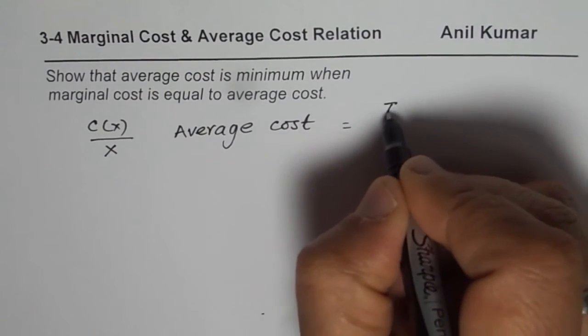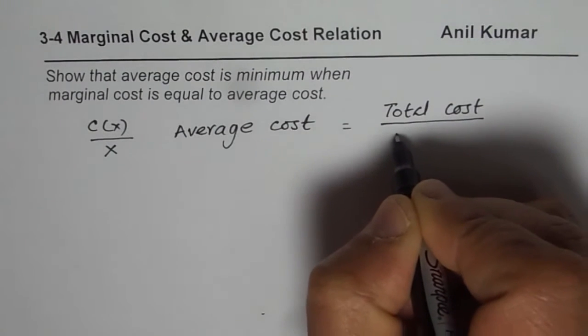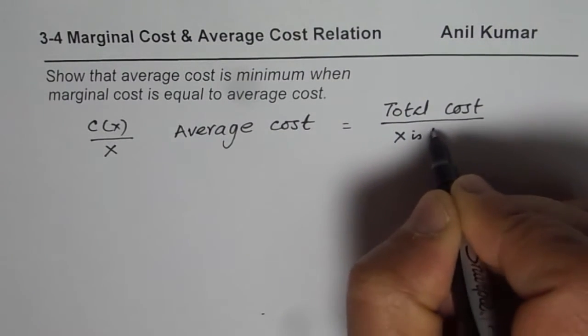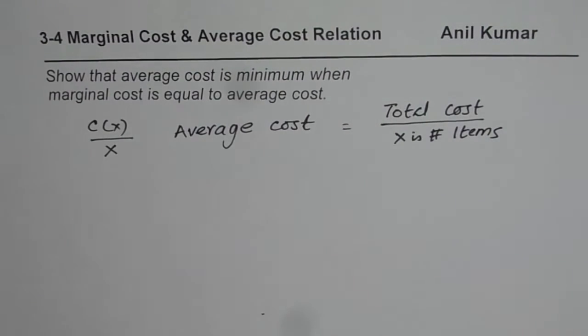c(x) is total cost and x is number of items. So it becomes average cost. So it makes sense. So this function or rate of change.